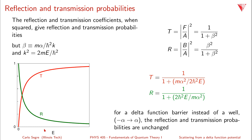As energy changes, the probabilities vary. When energy is low, the transmission probability approaches zero because the barrier is too large and everything is reflected. As you increase the energy, the transmission probability approaches one asymptotically and the reflection probability approaches zero asymptotically. As E becomes very large, the term m·alpha²/(2·h-bar²·E) becomes small compared to one and T approaches one, while R = 1 over something very large approaches zero.